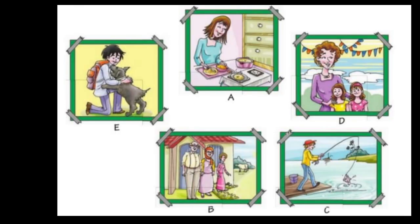Here at the start of the chapter, we can see some pictures. Picture A shows someone cooking food. In picture B, someone is going traveling or moving out of the house. In picture C, there is a person doing fishing. In picture D, there is a beautiful scene where there are two girls and one aunt. And in the last one, we can see a dog and a boy.